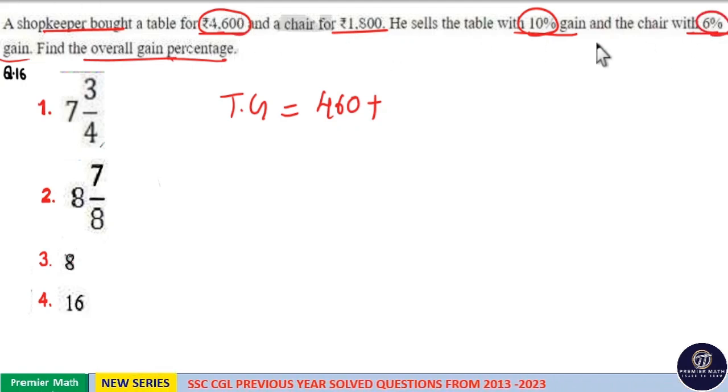Now, the 6% on this $1,800. 100% is $1,800. 10% is $180. 1% is $18. So, 18 into 6. 10 into 6 is equal to 60. 8 into 6 is equal to 48. So, 60 plus 48 equals 108.